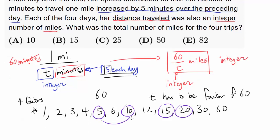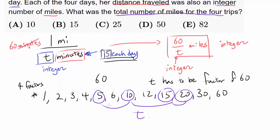So these are the values of T. And we wish to find the total number of miles for the 4 trips. So we have to calculate distance for each of them and just add them up.